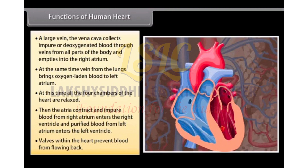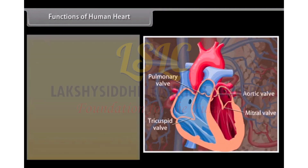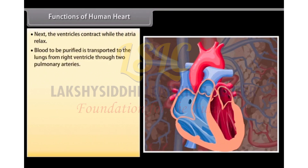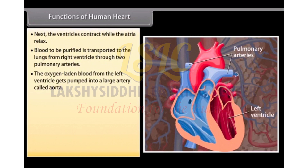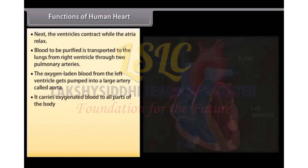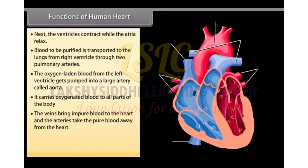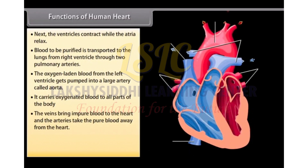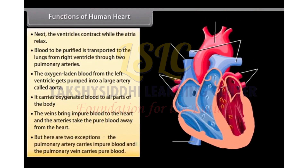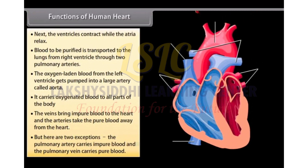Valves within the heart prevent blood from flowing back. Next, the ventricles contract while the atria relax. Blood to be purified is transported to the lungs from the right ventricle through two pulmonary arteries. The oxygen-laden blood from the left ventricle gets pumped into a large artery called aorta, which carries oxygenated blood to all parts of the body. The veins bring impure blood to the heart and the arteries take pure blood away from the heart. However, there are two exceptions: the pulmonary artery carries impure blood and the pulmonary vein carries pure blood.